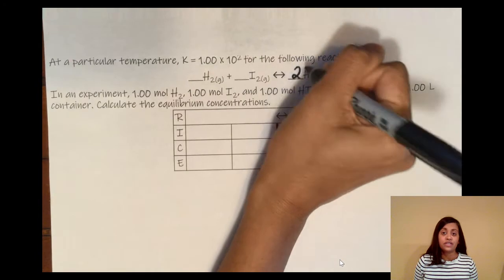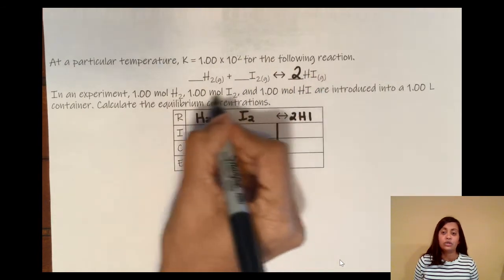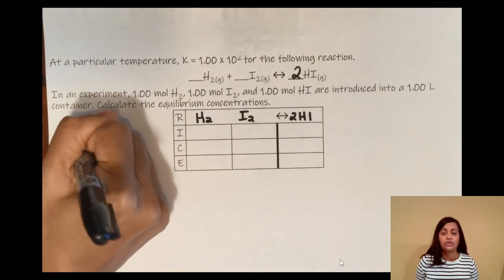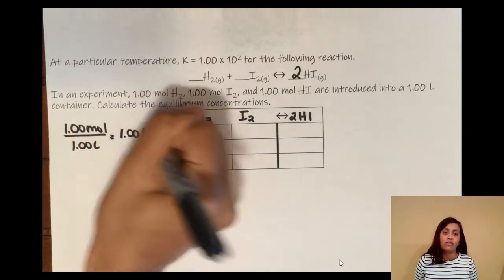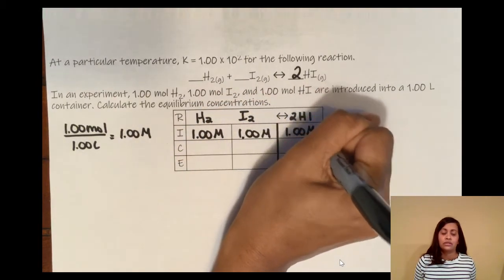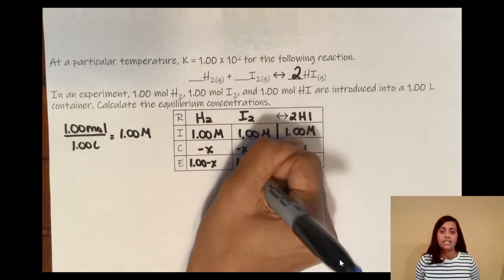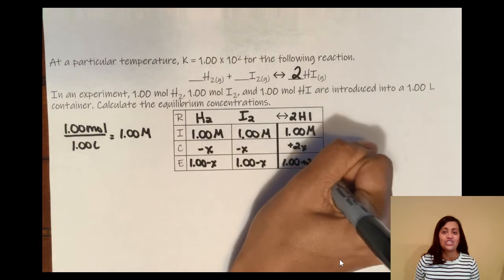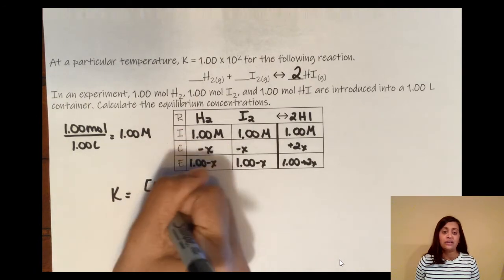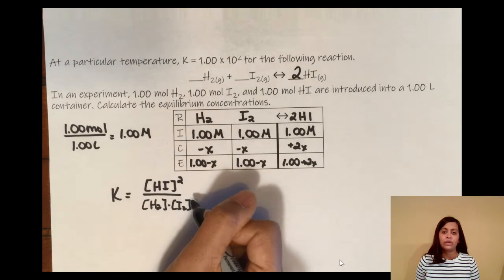The balanced equation is H₂ + I₂ in equilibrium with 2HI. We have 1.00 moles of each in a one-liter vessel, so all initial concentrations are 1.00 M. The change for H₂ and I₂ is minus x each, and for HI it's plus 2x — that 2 comes from the coefficient. The equilibrium expression is K = [HI]² / ([H₂][I₂]). Since this is a large K value, we cannot assume x is negligible.